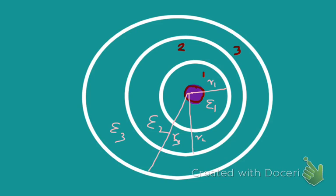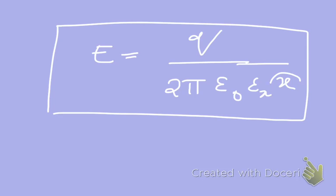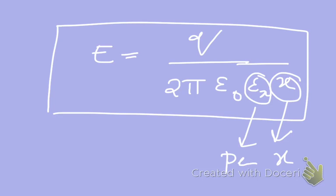Now, we all know the basic formula: E is equal to Q divided by 2π ε₀ ε x, times x — where x is the distance (in our case a radius) and ε is the permittivity of that material at that specific radius. We will be using this formula for the next few minutes. First, consider insulation layer 1. When considering that layer, you have two boundary points.